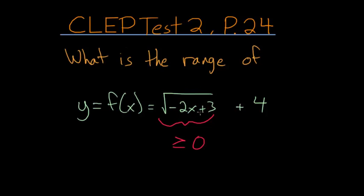and since this at its lowest is 0, then f(x) at its lowest would be 4. So we can say that y has to be bigger than or equal to 4.